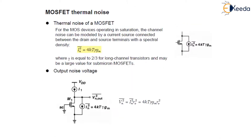MOS transistors also exhibit thermal noise and the most significant source is the noise generated in the channel. For long channel MOS devices operating in saturation, the channel noise can be modelled by a current source connected between the drain and the source terminal with a spectral density of In² = 4kTγgm.